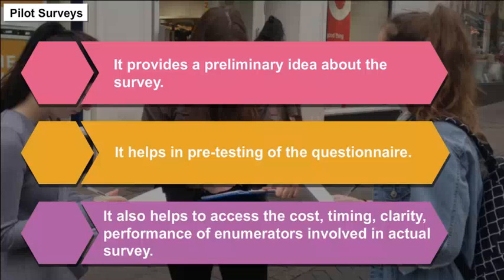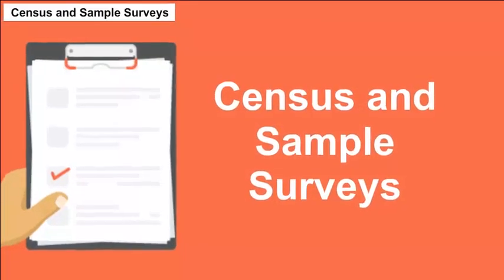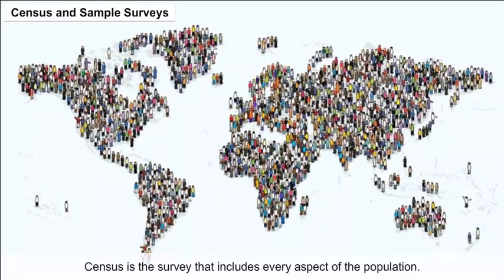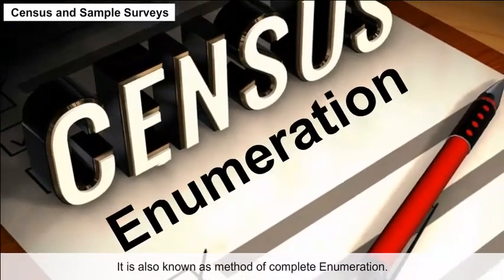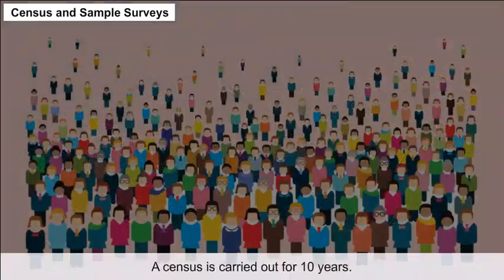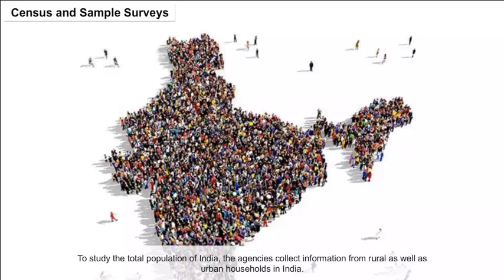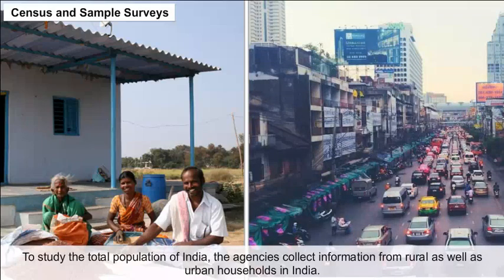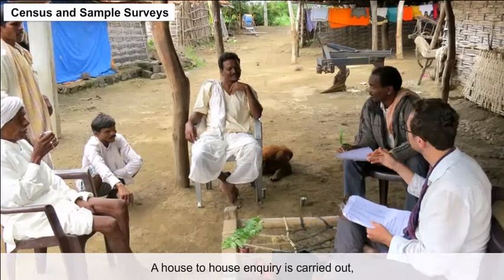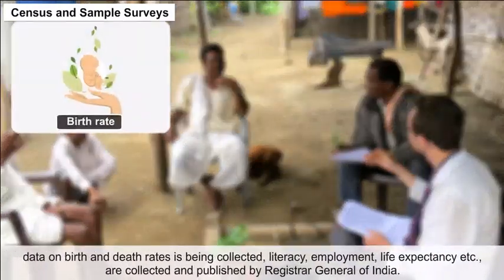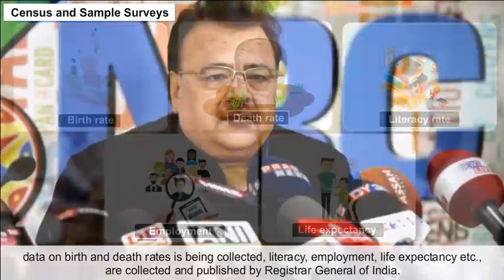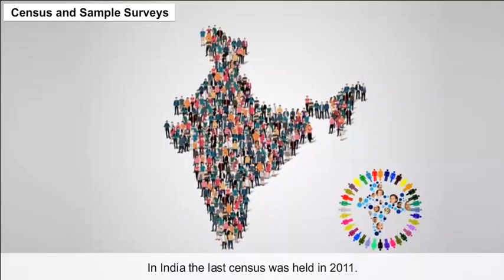Census and Sample Surveys. A census is a survey that includes every aspect of the population. It is also known as the method of complete enumeration and is carried out every 10 years. To study the total population of India, agencies collect information from rural and urban households. A house-to-house inquiry is carried out and data on birth and death rates, literacy, employment, and life expectancy are collected and published by the Registrar General of India. The last census in India was held in 2011.